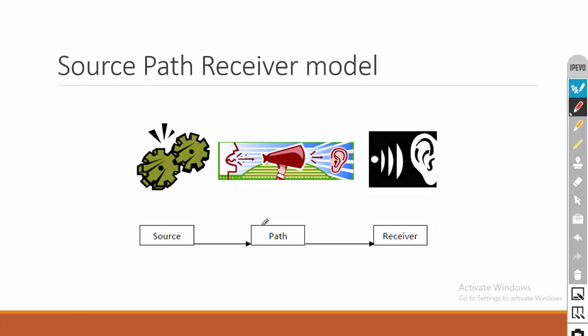For controlling vibration we can fix an isolator pad or use any control strategy in the following three places. The first one is the source — for example, if a machine is generating vibration, then the machine is the source of vibration. The second one is the path — if a machine is fitted on the shop floor and you are standing on the floor, you can feel the vibration on your leg.